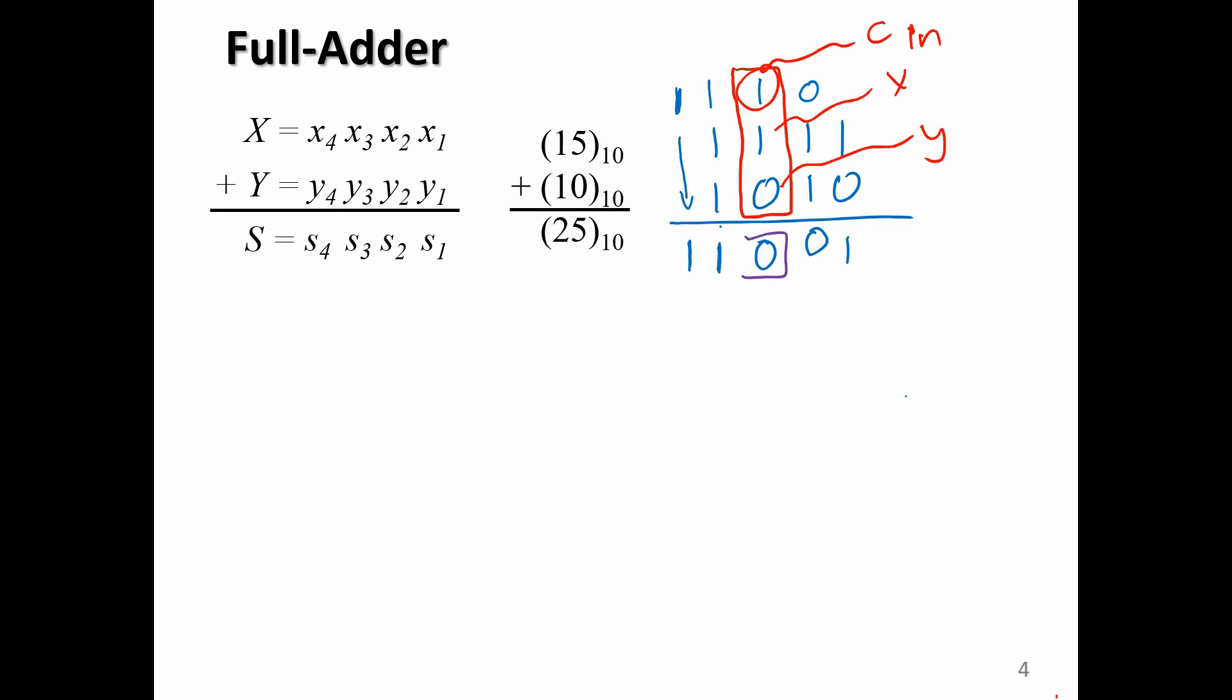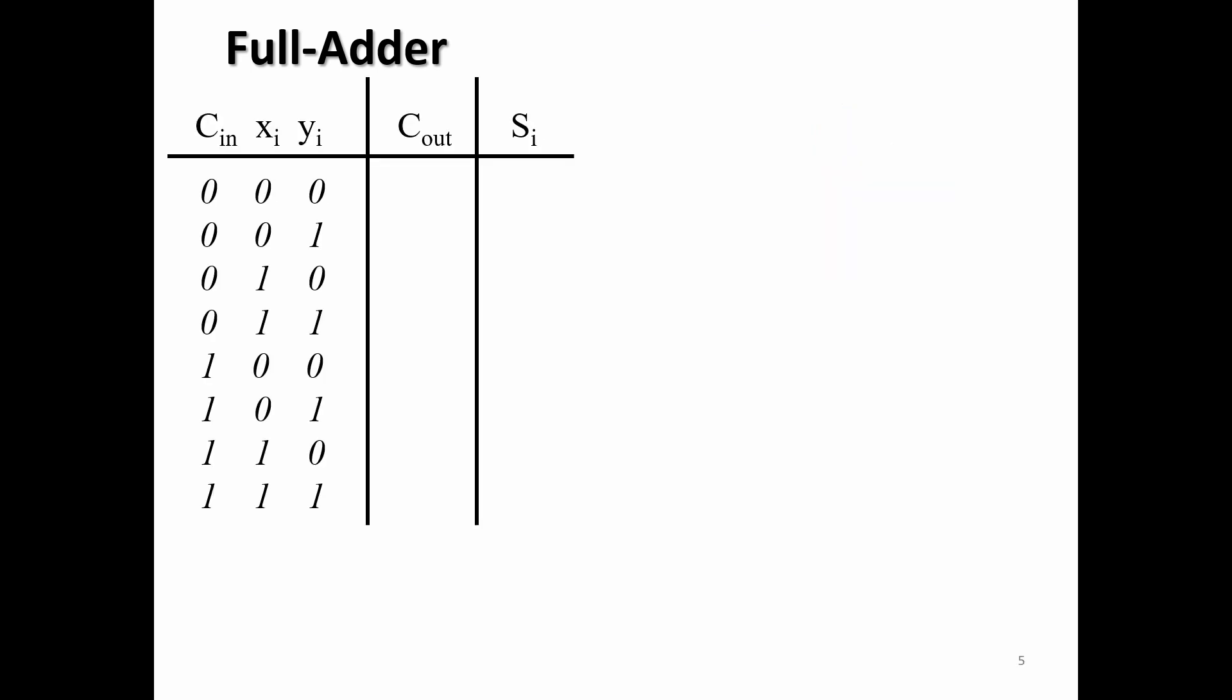For outputs, we get a sum and we get a carry, similarly to the half adder. But now we're going to call this one carry out, just to differentiate from the carry in. Similarly to the half adder circuit, we follow the same procedure where we start with a truth table. The truth table for the full adder will be something like this. We have x and y as inputs, but we also have c in, carry in as input. So if we fill the outputs, and these other outputs for the truth table, it will be something like this. So we're just adding c plus x plus y.